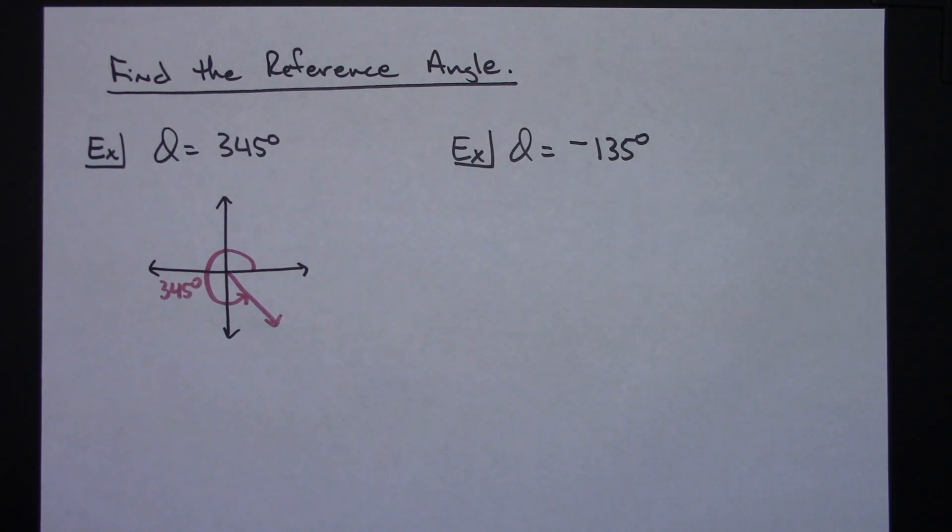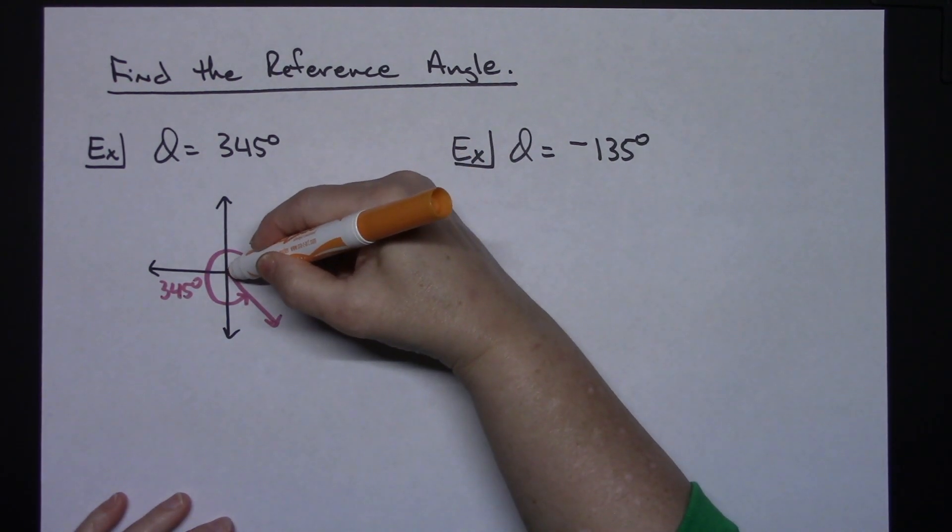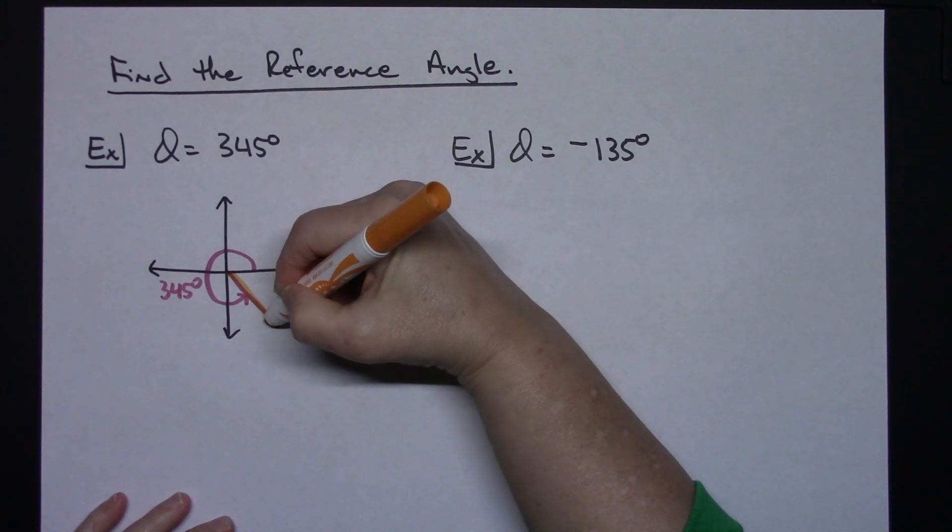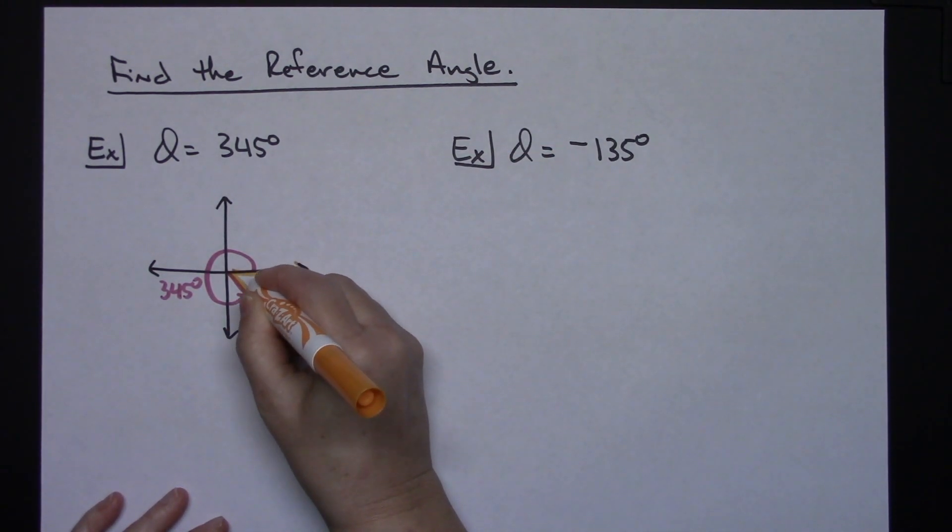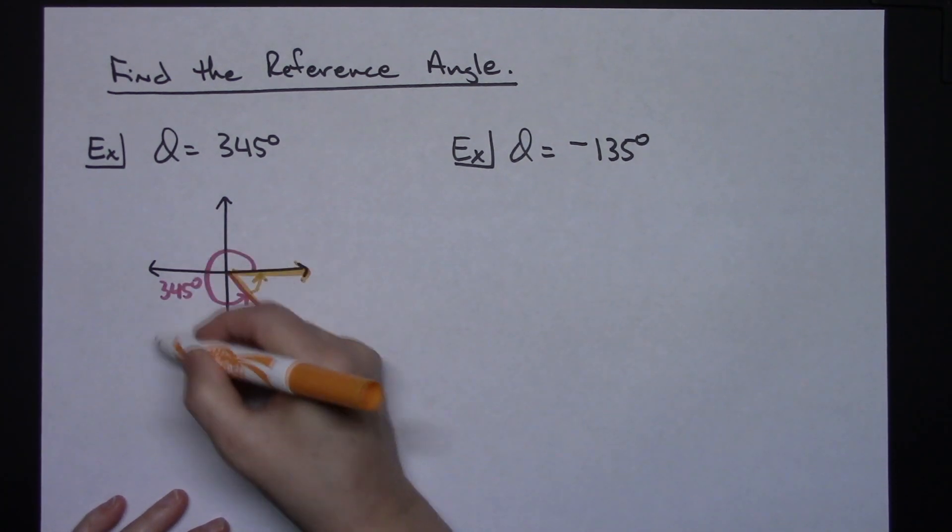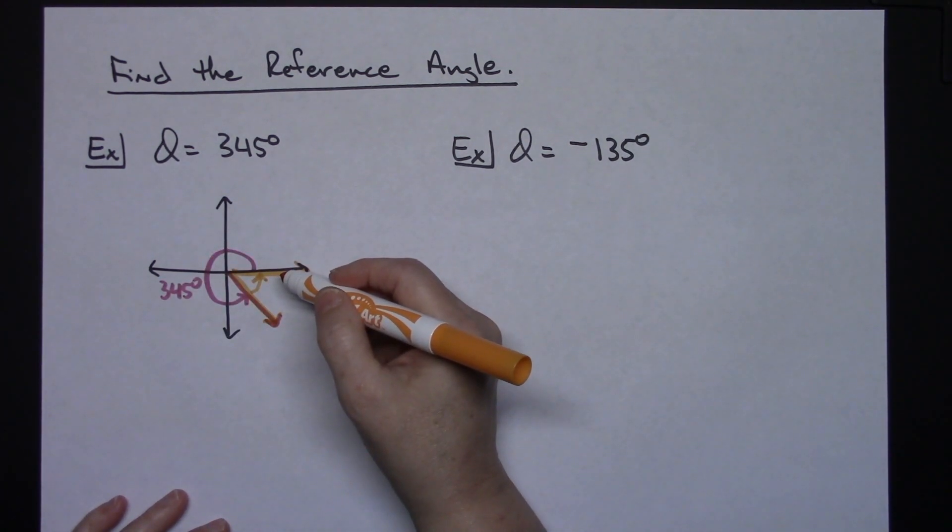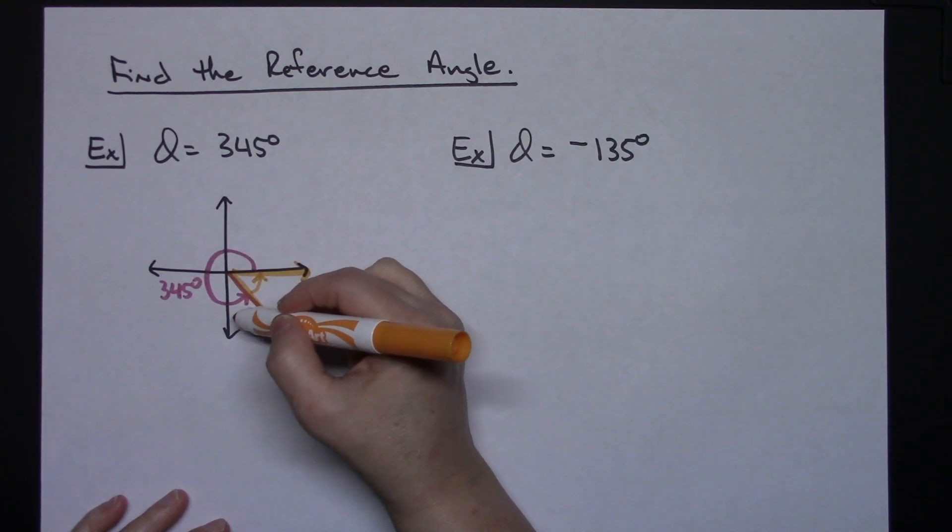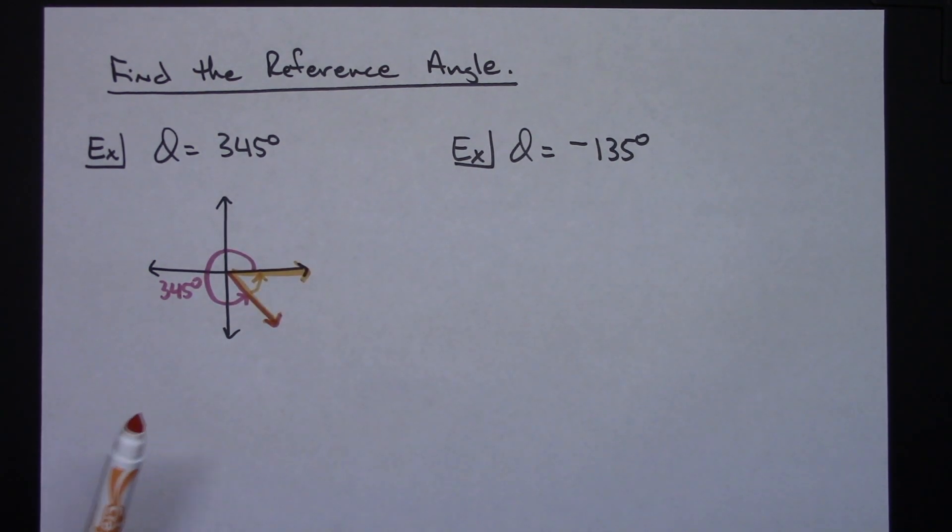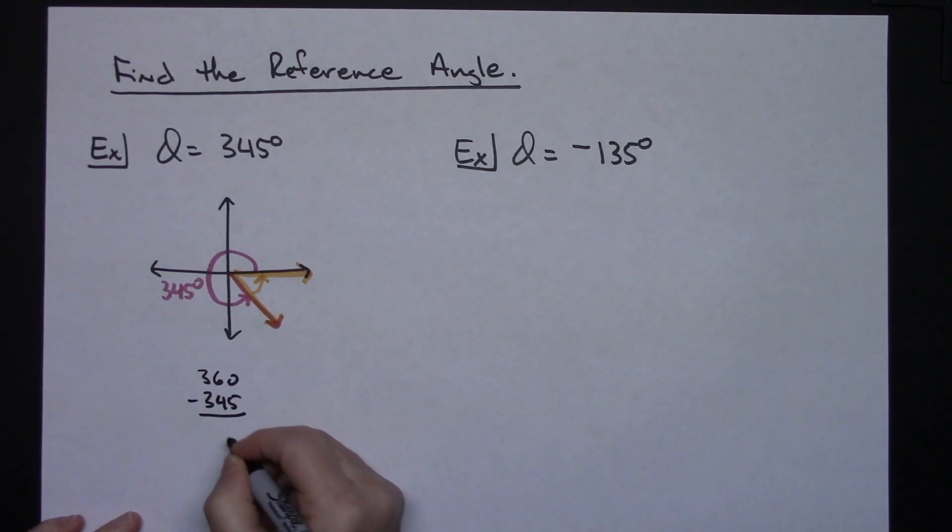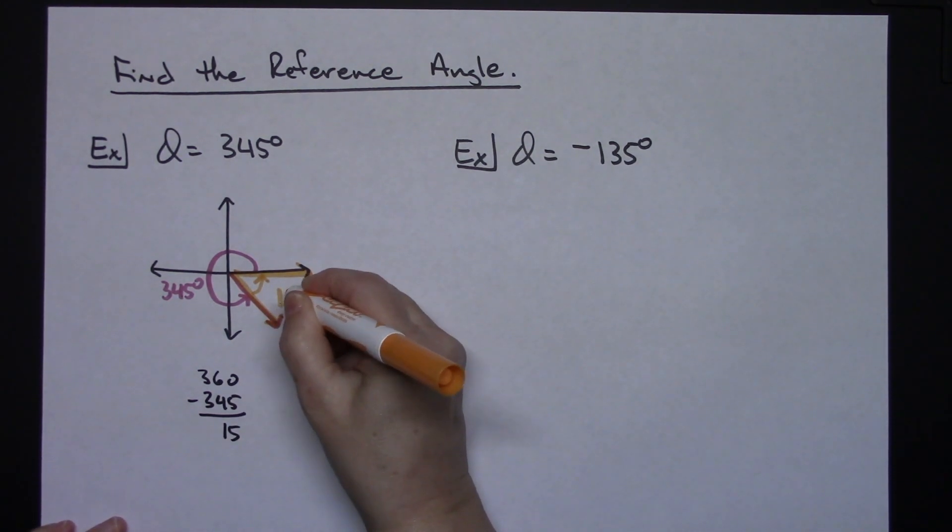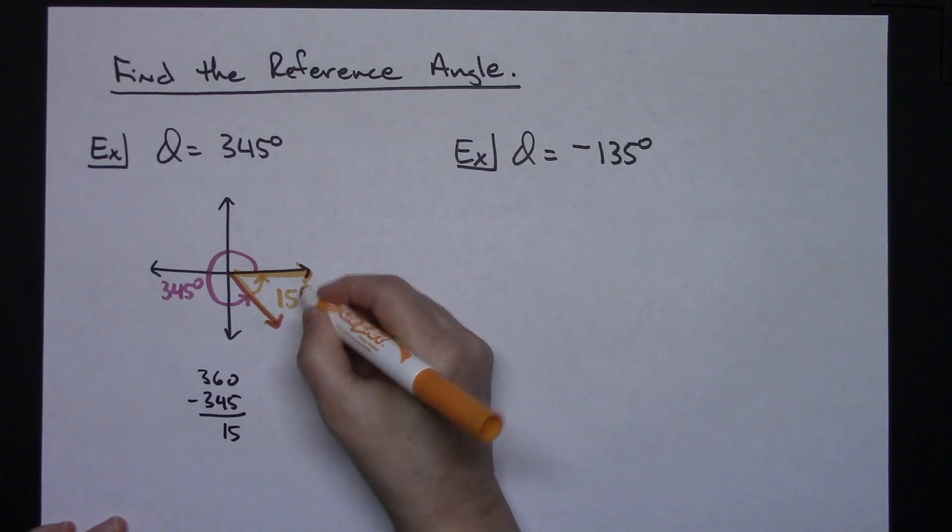Now we're looking for that reference angle. It has to be between the terminal side and the x-axis. It has to be acute and positive. So if we know all the way around is 360 degrees and we have come to 345 degrees, to find that reference angle I would just need to take 360 minus 345 degrees. Do the subtraction you're going to end up with 15 degrees there. So our reference angle will be 15 degrees.